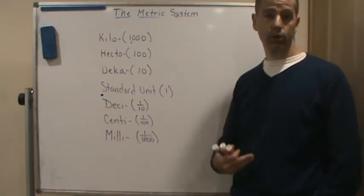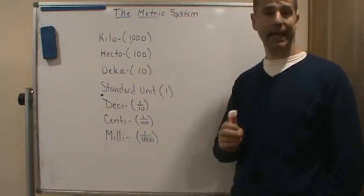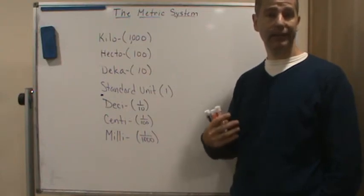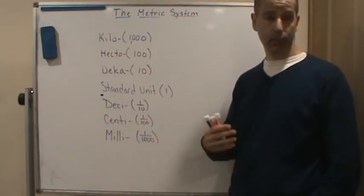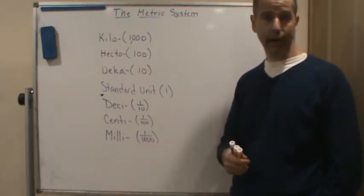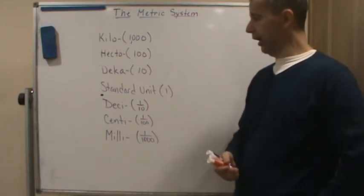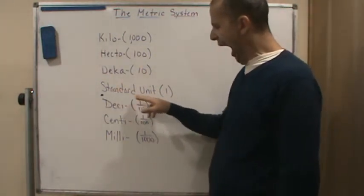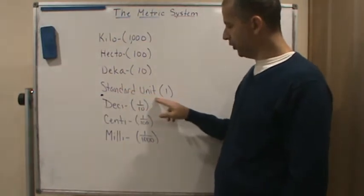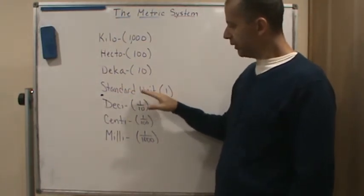Since it's a base 10 system, it's basically telling us how many decimal places to the left or the right we're going. For example, we have a standard unit here, and these are the prefixes we would add depending on what power of 10 we're multiplying by.